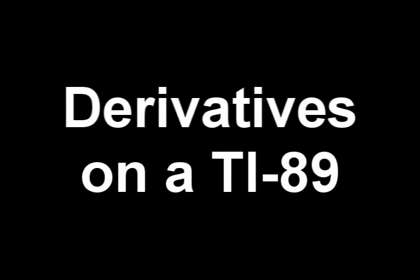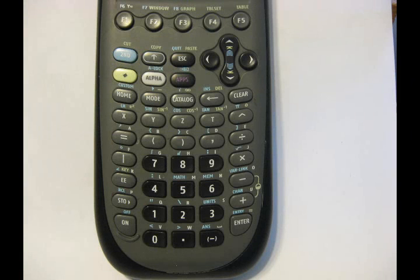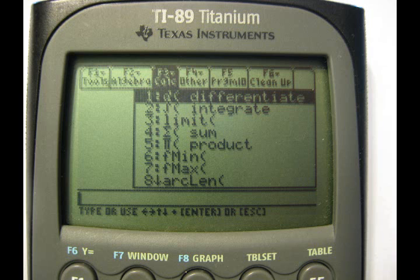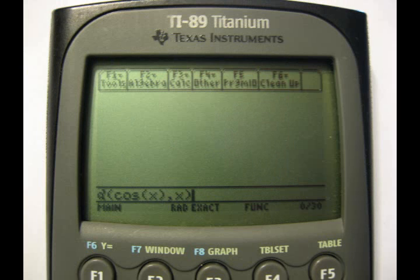To do a derivative, press F3, and then select differentiate number 1, and then in the parenthesis, you put the function, comma, x, and then close the parenthesis.